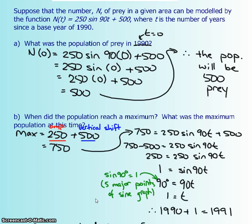Going on to the next question. When did the population reach a maximum and what was that maximum at that time? So I want you to think about it. If you have an amplitude of 250, that should be your max. However, you've also gone up 500. So that's the 250, your amplitude, plus your vertical shift. Your maximum number of prey is 750. So we answered this question right here. What is the maximum?